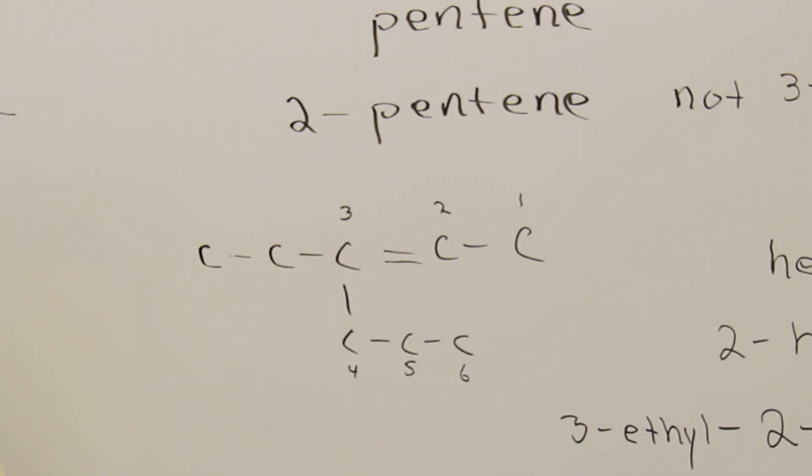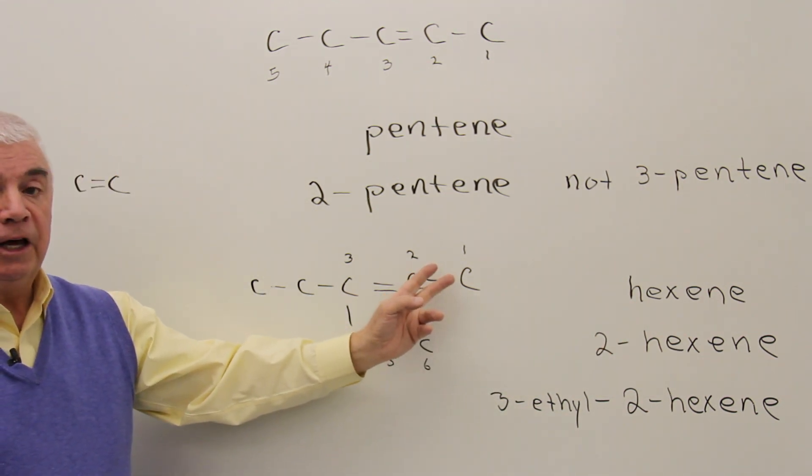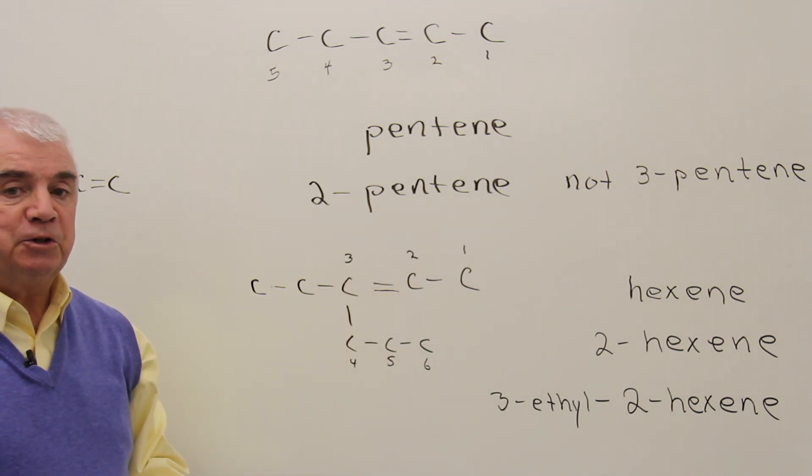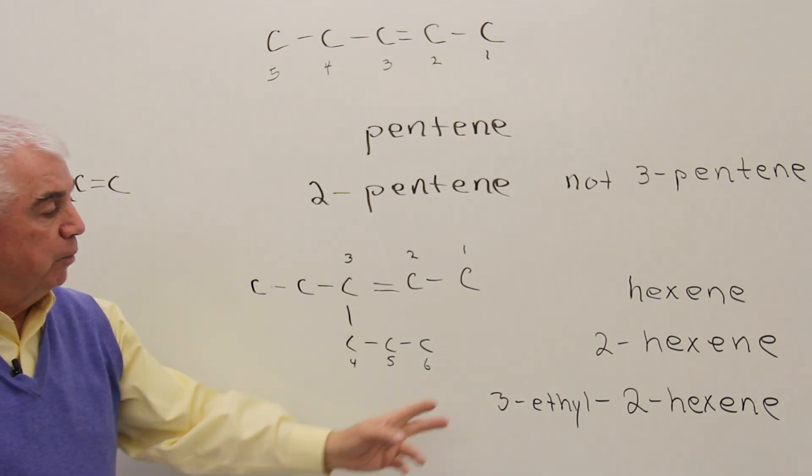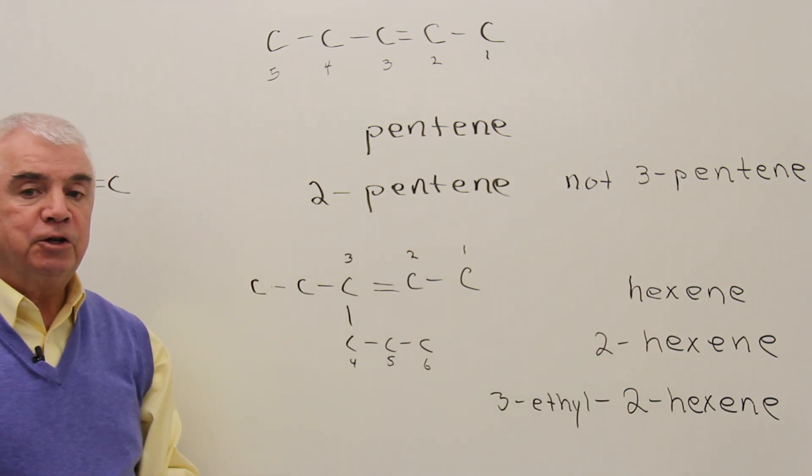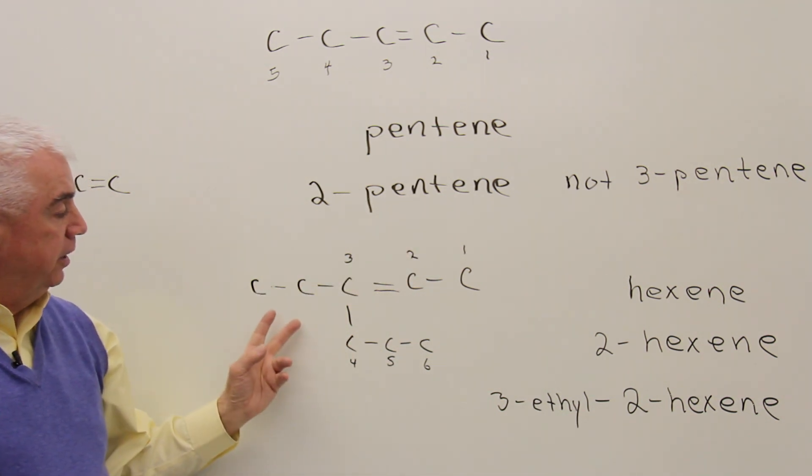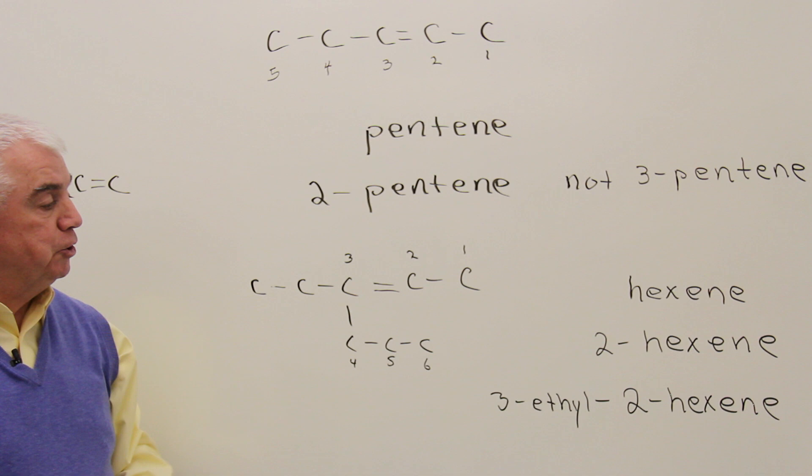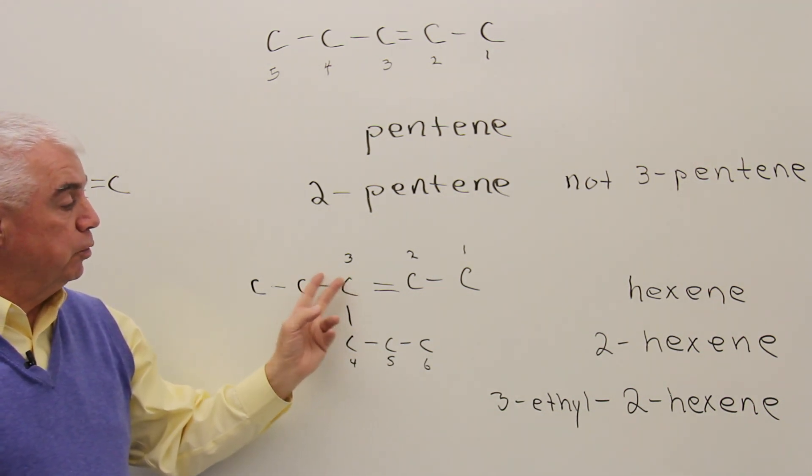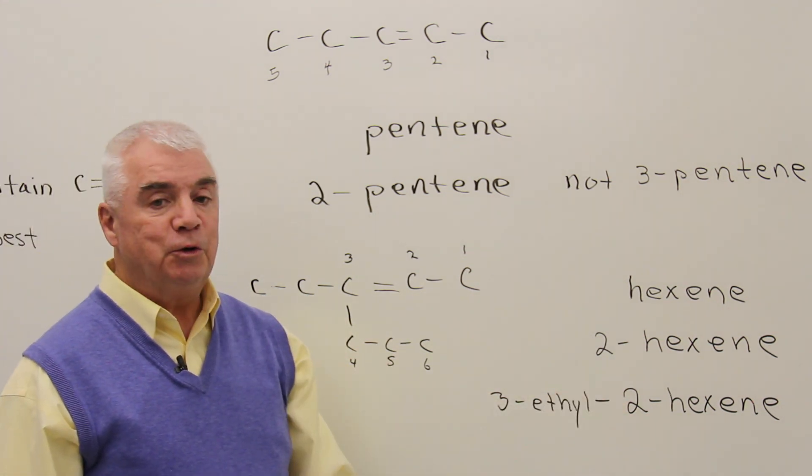One, two, three, four, five, six. The base word would be hexene. We'd number from the end closest to the carbon-carbon double bond. So the double bond is between positions two and three. It would be a 2-hexene. And then finally, we'd want to add to this any carbons that were not included as a part of the longest chain. And here we have two of those carbons at position three. This would be an ethyl group, and it's located at position three. The full name then would be 3-ethyl-2-hexene.